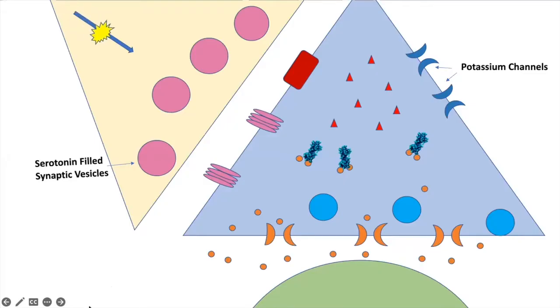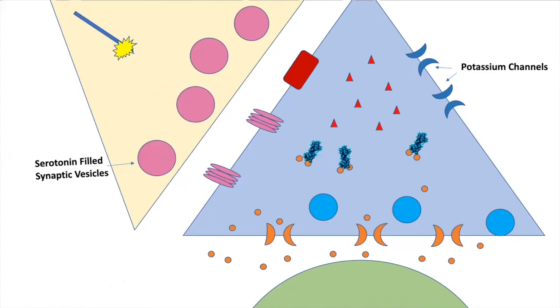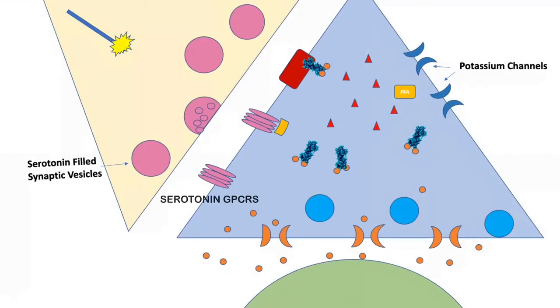An action potential from the facilitating interneuron triggers the release of serotonin onto the sensory neuron. The serotonin then binds to G-protein coupled receptors.